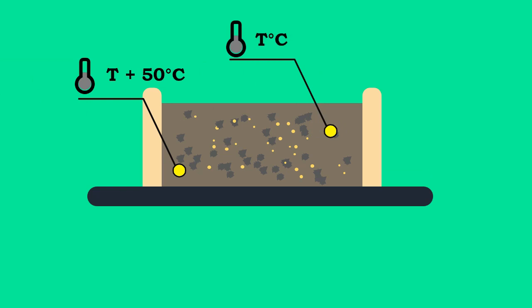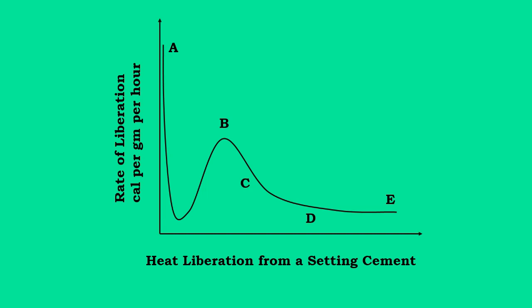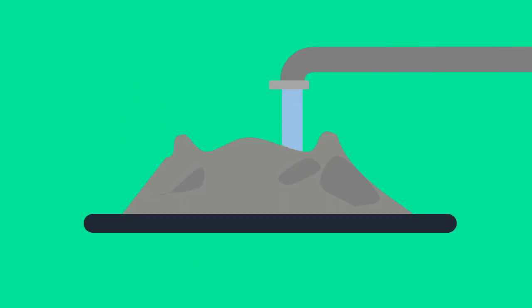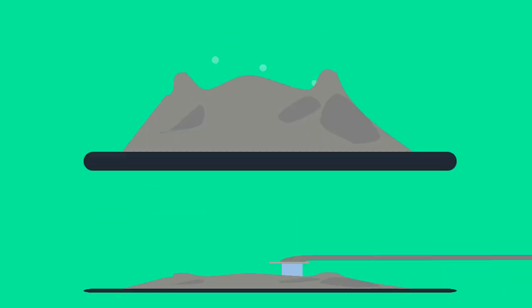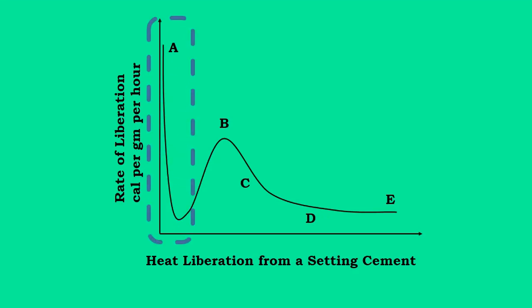The image shown on the screen shows the pattern of the liberation of heat from the setting of cement and during early hardening period. Once the cement is mixed with water, a rapid heat evolves lasting for a few minutes. The initial heat evolution is generally due to the reaction of a solution of aluminates and sulfates, which is represented in the peak point a.